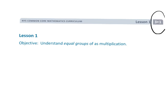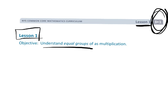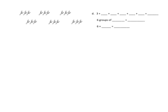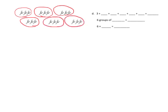This is the third grade Module 1 Lesson 1. In this lesson we are understanding that equal groups really suggests the act of multiplication. In this picture we've got what looks like scissors, and we've got one group of scissors, another group, another group — so we've got these equal sized groups. We have six groups, and that's six groups of three.